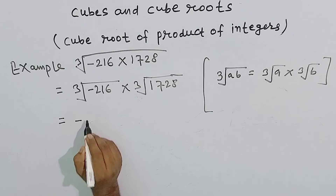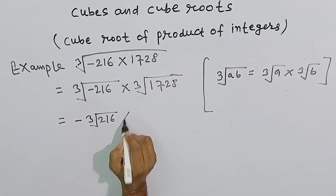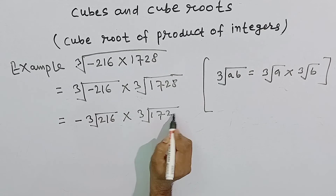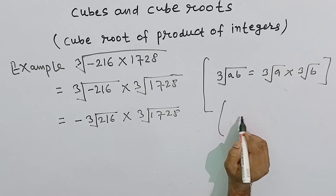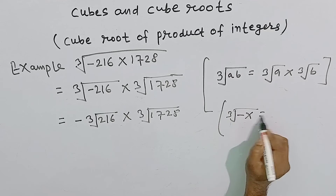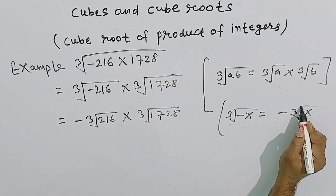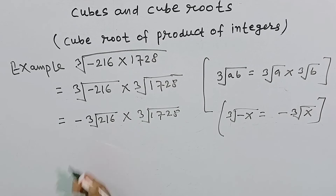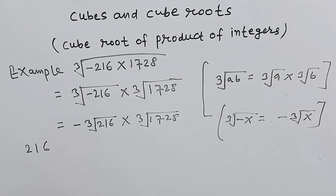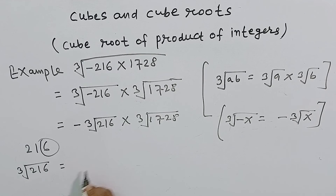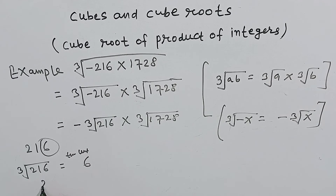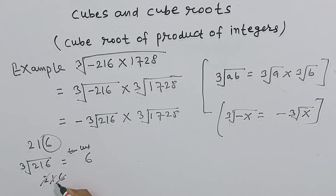Is equal to minus cube root of 216 into cube root of 1728. यहाँ हमने minus को बाहर निकाल लिया क्योंकि for any integer x, cube root of minus x is equal to minus of cube root of x होता है। अब 216 का unit digit 6 है, तो इसके cube root का unit digit भी 6 होगा। 10s place के लिए हमें units, 10s और 100s place के digits को strike out करना है।